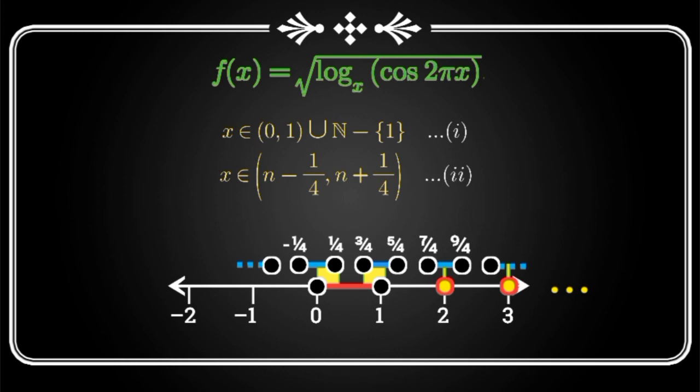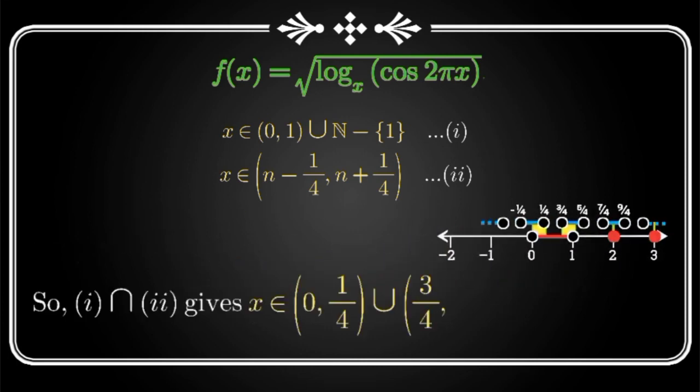Now we can also notice that all my natural numbers except 1 are also covered in this intersection. It is because of the fact that we saw that the second interval says that x should belong to n minus 1 by 4 to n plus 1 by 4 where n belongs to an integer. Now clearly n minus 1 by 4 is less than n and n plus 1 by 4 is greater than n. So always n will lie between these two numbers. So I finally get my intersection as x belongs to 0 to 1 by 4 union 3 by 4 to 1 union 2, 3, 4, 5 and so on, all the natural numbers except 1.